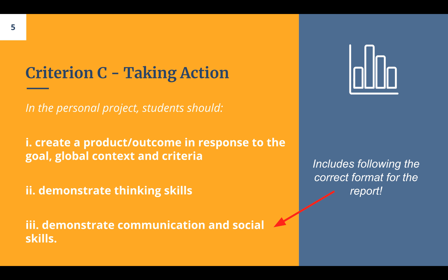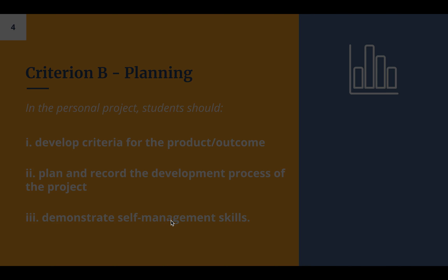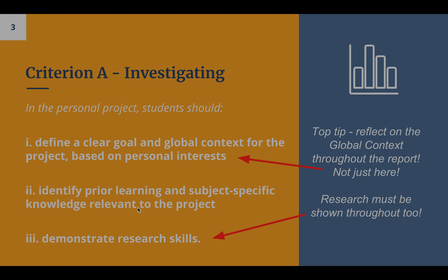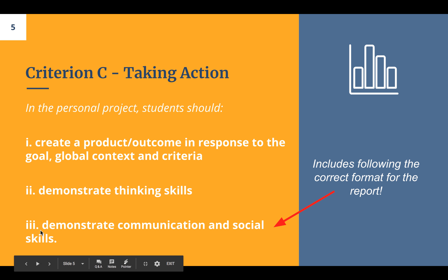Criterion C is taking action, and you'll find that's pretty easy as well. You'll see we have thinking skills, communication and social skills, self-management, and research — those are the five ATLs. When you write about thinking skills, communication, or social skills, you're going to go back to that ATL spreadsheet I've shared with you.